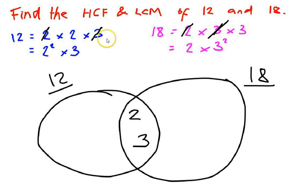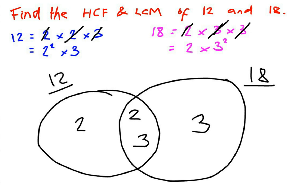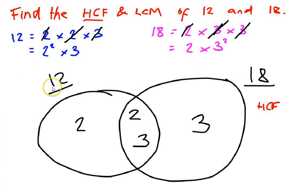There are no more factors common to both, so the remaining factors go in the non-overlapping parts of each circle. The remaining 2 from 12 goes in the 12 circle, and the remaining 3 from 18 goes in the 18 circle. We can check: 3 times 2 times 3 gives 18, and 2 times 2 times 3 gives 12 — correct. The highest common factor is found by multiplying everything in the overlap: 2 times 3 equals 6. So the highest common factor of 12 and 18 is 6.